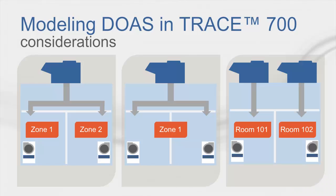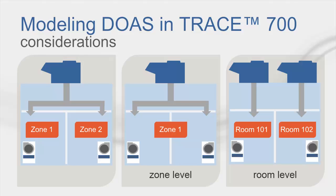Second, the dedicated outdoor air coil can be set to system, zone, or room level. The coil level dictates where the dedicated ventilation unit or units will be placed, as shown in these three diagrams. For example, if system level is selected, all zones within the system will share the same DOA. However, if room level is selected, each room will get a separate DOA.